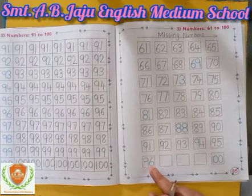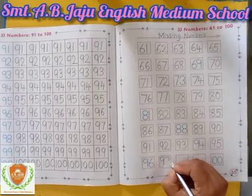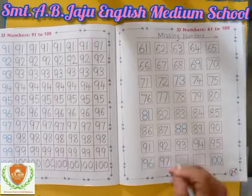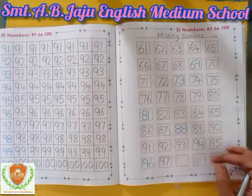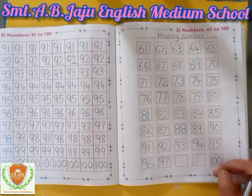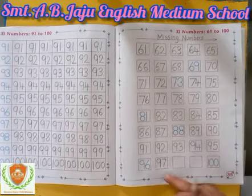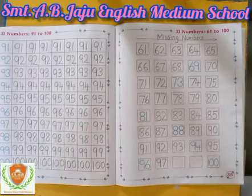After 96, which number will become? Which number will we write down here? First write down 9, then write down 7. So which number is this? 97.